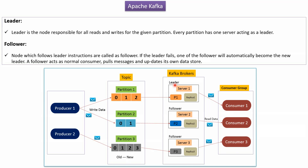Here you can see the leader. The leader is the node responsible for all reads and writes for a given partition. Every partition has one server acting as a leader. Here you can see the followers. A follower is a node that follows the leader's instructions. If the leader fails, one of the followers will automatically become the new leader. A follower acts as a normal consumer which pulls messages and updates its own data store.